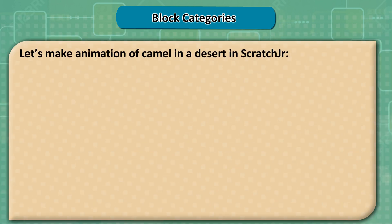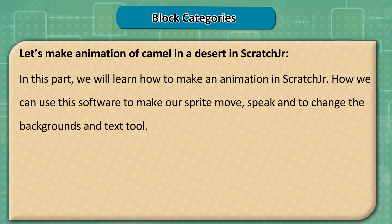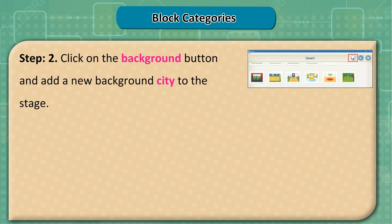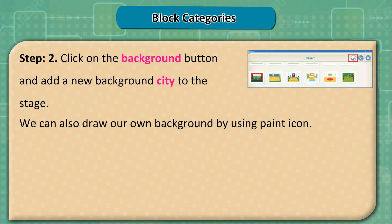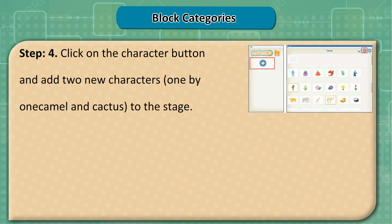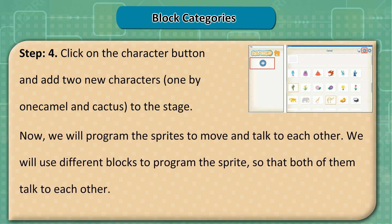Let's make an animation of a camel in a desert in ScratchJunior. In this part, we will learn how to make an animation — how we can use this software to make our sprite move, speak, and change backgrounds using the text tool. Open the ScratchJunior window. We will use different blocks to program the sprites so that both of them talk to each other.